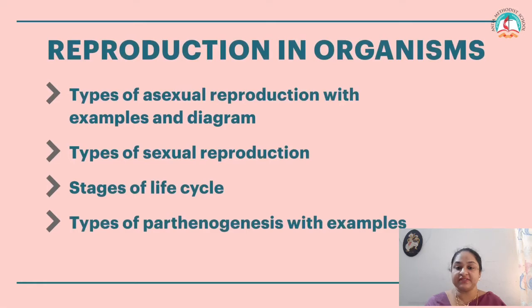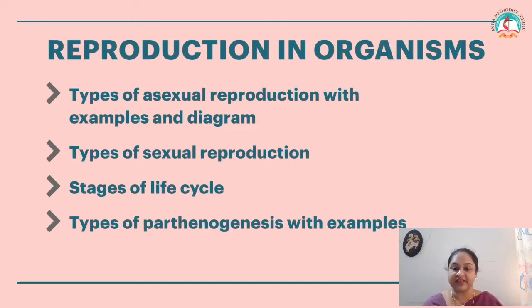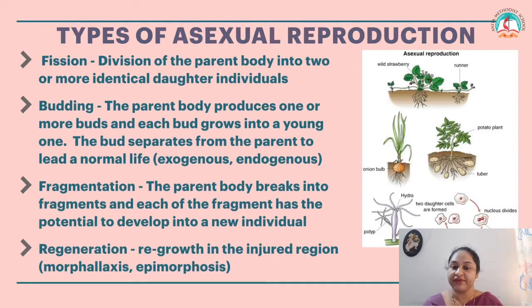In this class on reproduction in organisms, we will go through the types of asexual reproduction with examples and diagrams. Then we will cover types of sexual reproduction, stages of life cycle, and types of parthenogenesis with examples. So the types of asexual reproduction are fission, budding, fragmentation, and regeneration.